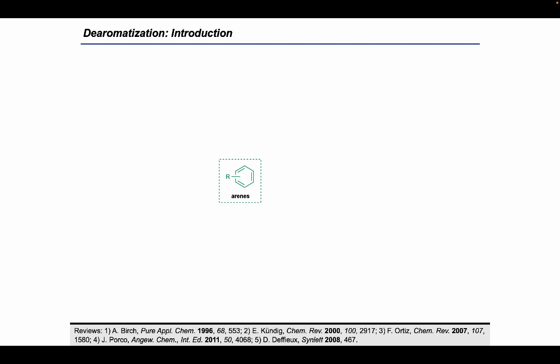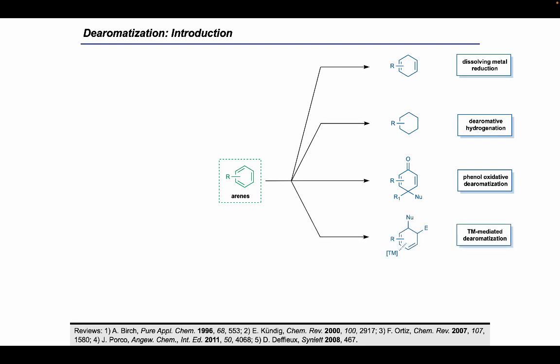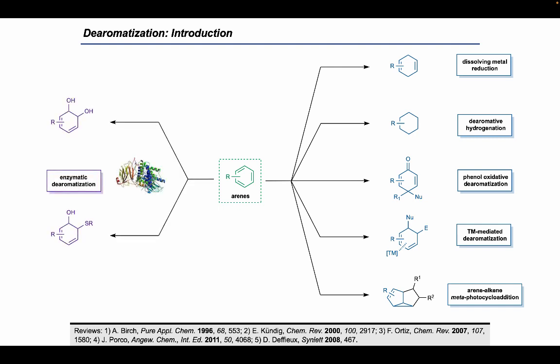To begin, I want to provide an overview of dearomative methods, which in the simplest forms have been taught in introductory organic chemistry courses, including the Birch reduction, hydrogenation, and oxidative dearomatization of phenols. However, even more complex and exotic transformations, including transition metal dearomatizations as well as arene-alkyne meta-photocycloadditions, also exist. While these and others serve as the chemical dearomative methods available, it should be noted that enzymatic dearomatizations have also been realized, including dearomative dihydroxylation.